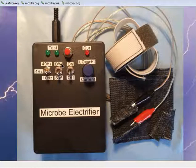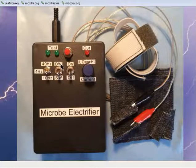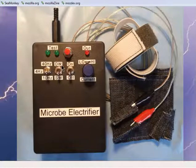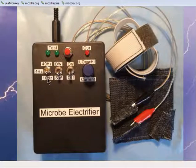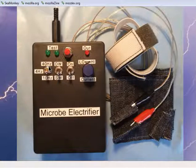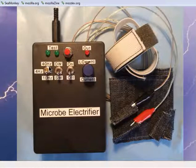If you notice on the microbe electrifier, I've got a switch out here that says DW and SW. The DW stands for damped wave and the SW stands for square wave. And I've got three different frequencies. You can select 4, 10, or 40 hertz. Hertz is a scientific word that means cycles per second.